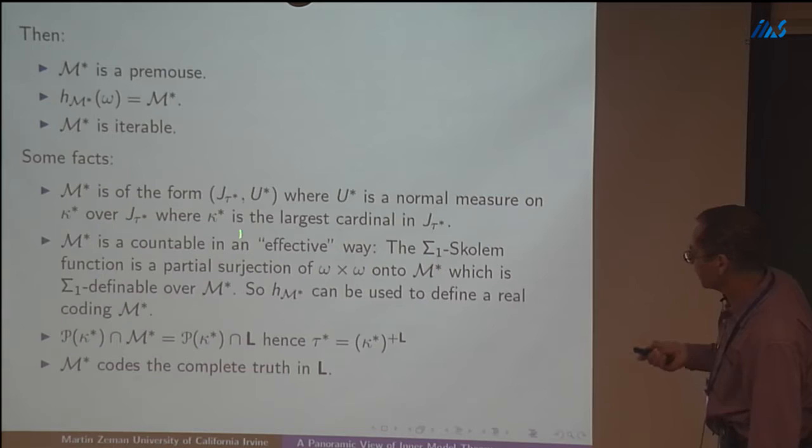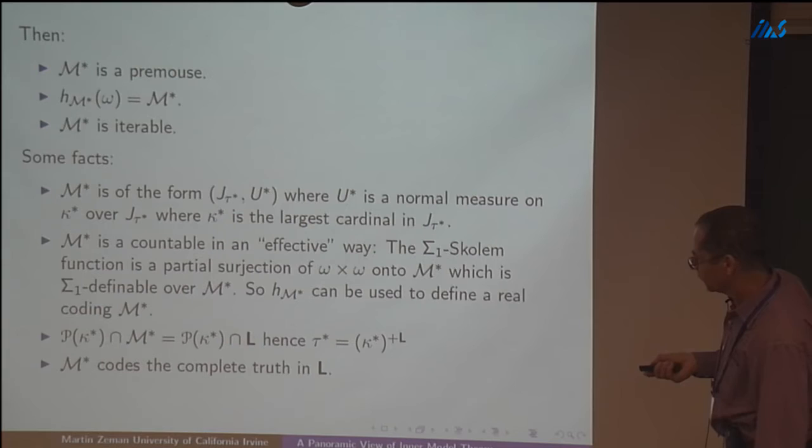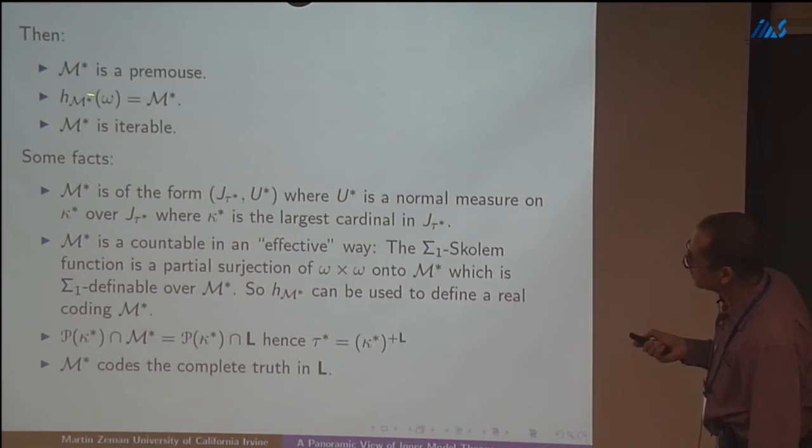This is a pre-mouse. Iterability follows from the lemma mentioned yesterday: if I can embed something into an iterable structure, it is itself iterable. And this follows by definition because if you take the hull of the entire structure, you get the entire thing back — due to the uniformity of the definition of this Skolem function, since the Skolem function for m* is defined exactly the same way as for m.